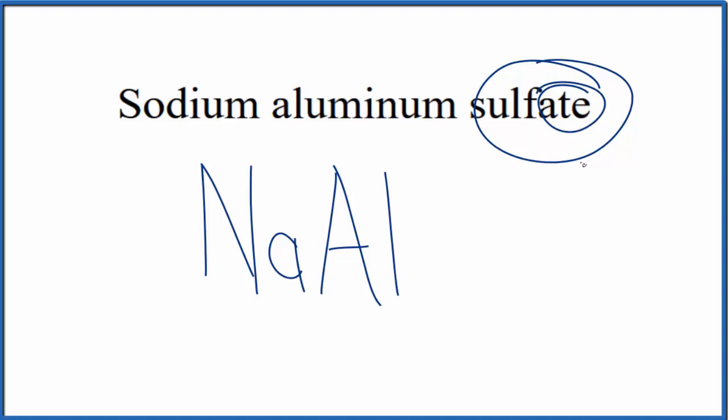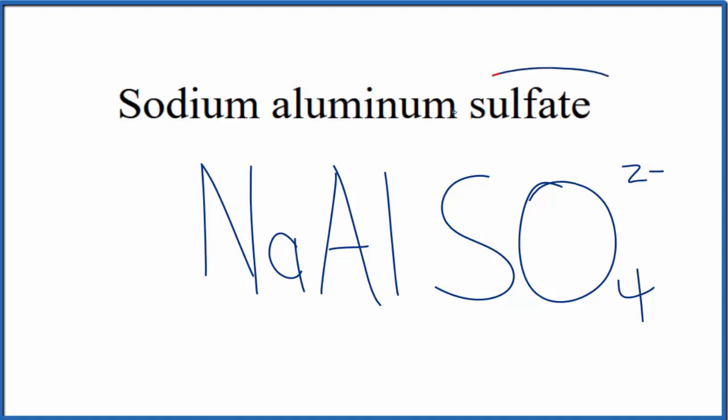Then for the sulfate that ends in 'ate,' that means it's going to be a polyatomic ion. You either memorize that the sulfate ion is SO4 and the whole thing has a charge of 2 minus, or if you're allowed, you could look it up. I recommend you memorize this sulfate ion—it comes up a lot in chemistry.